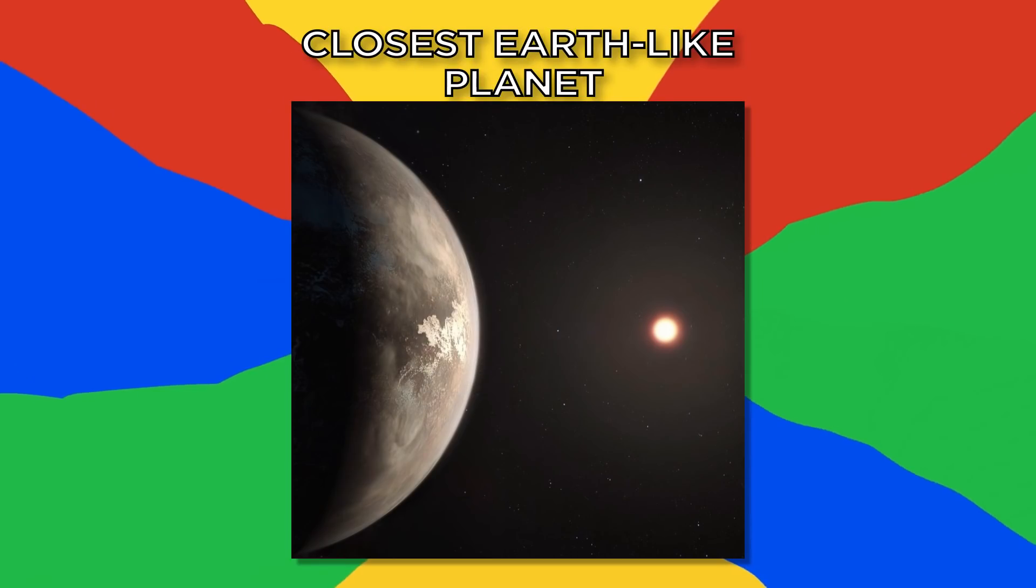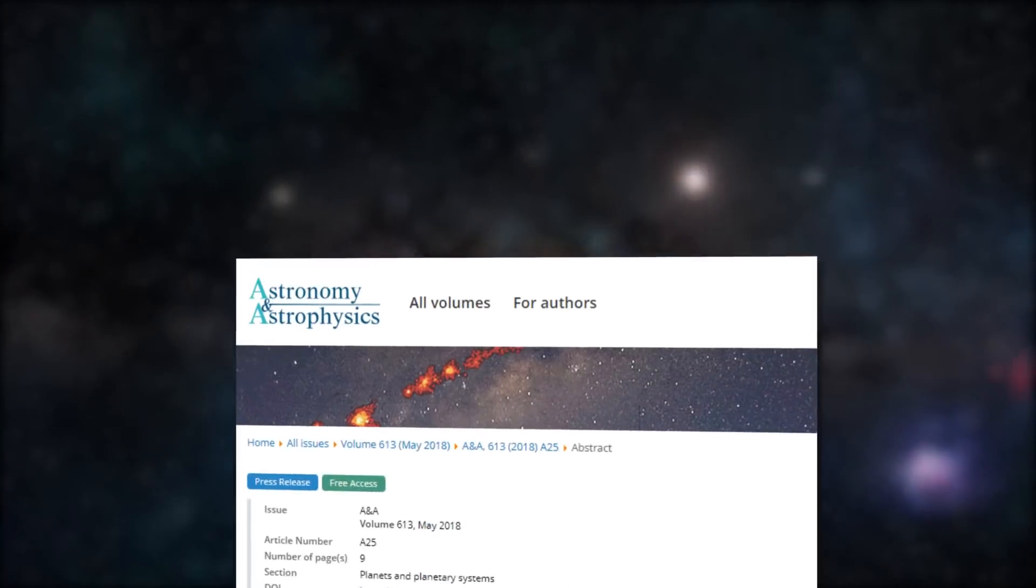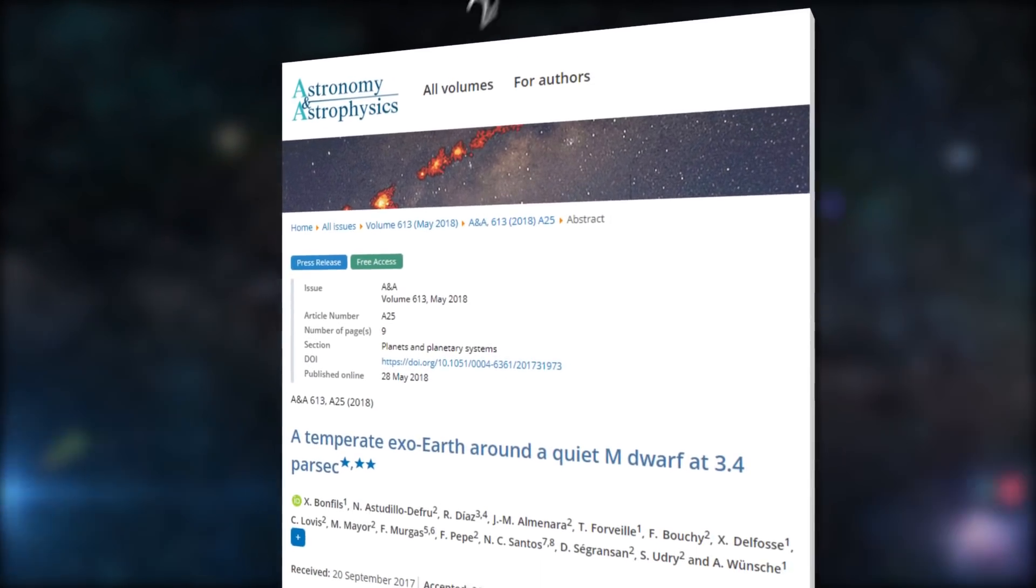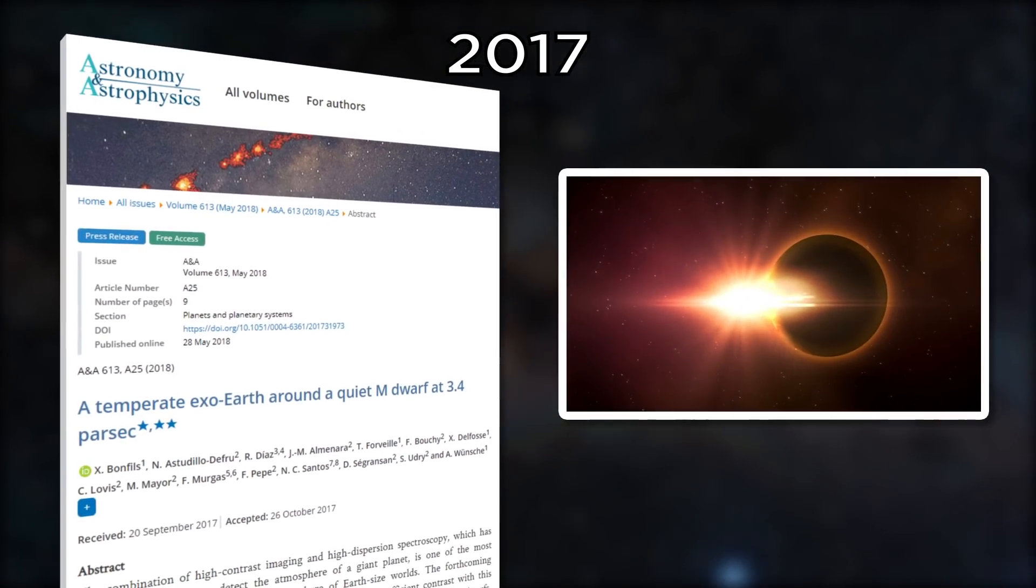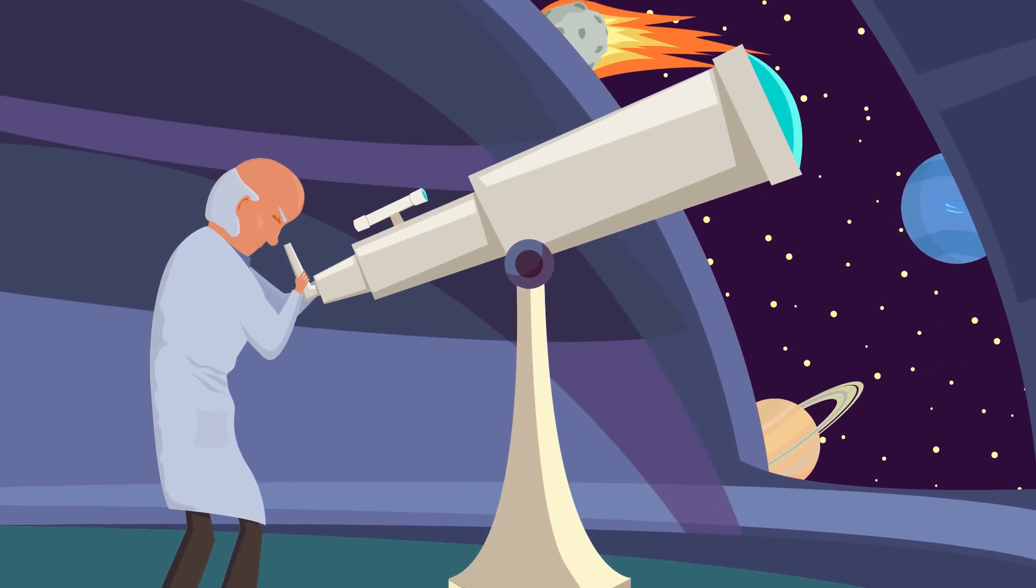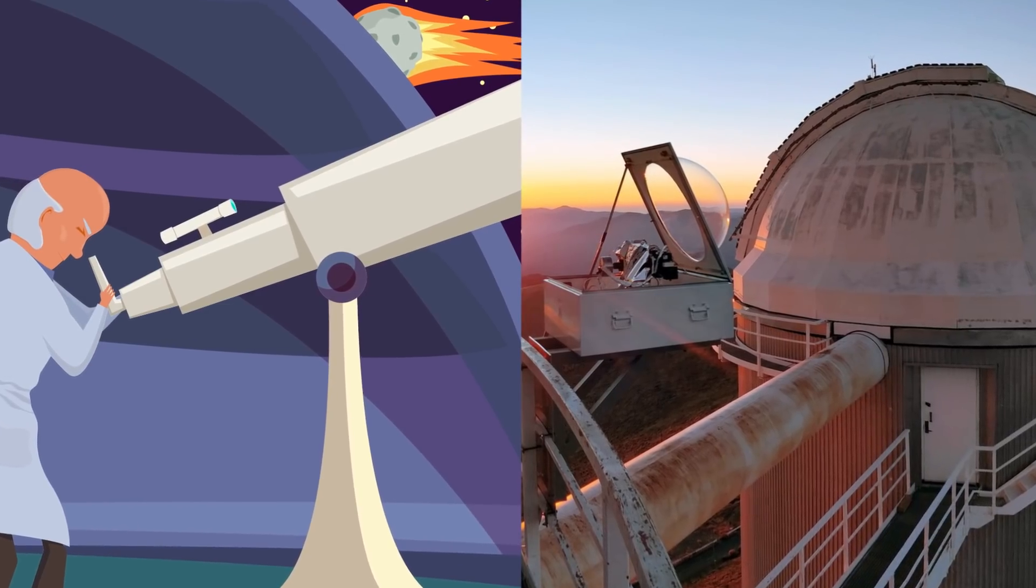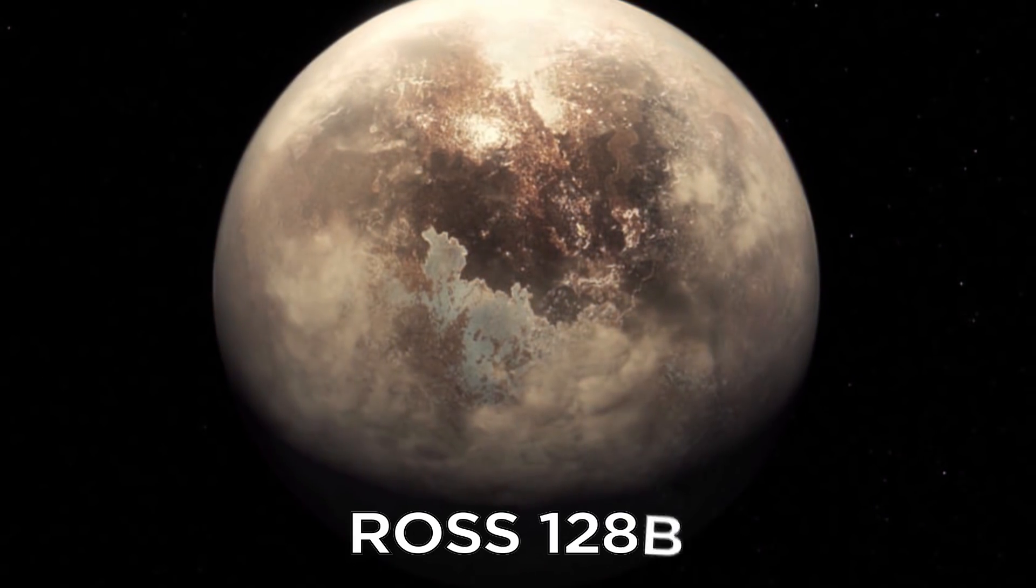Number four, closest Earth-like planet. A study published in Astronomy and Astrophysics in November 2017 detailed a special planet outside our solar system. The researchers discovered it using the HARPS planet-finding spectrograph in Chile. It's called Ross 128b, and it may have the conditions to support Earth-like life.